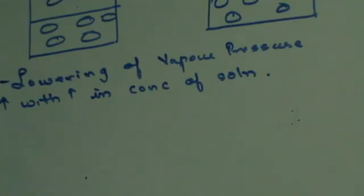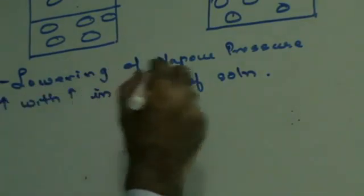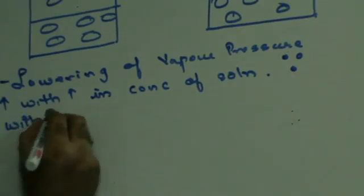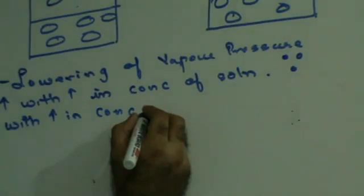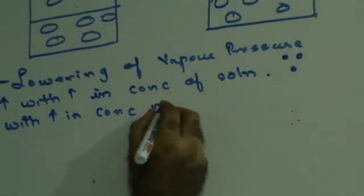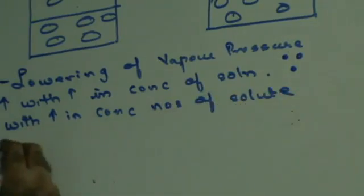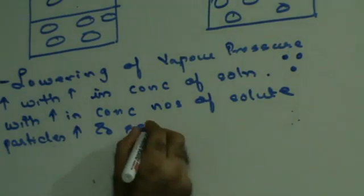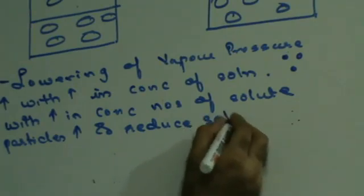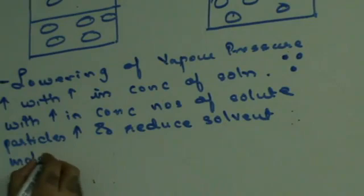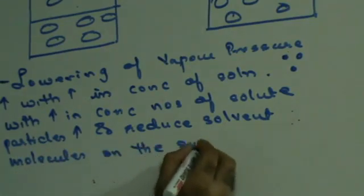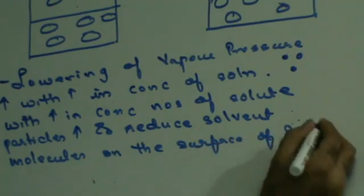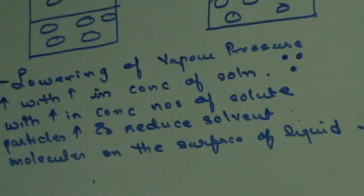Because with increase in concentration, the number of solute particles increases and thereby reduces the number of solvent molecules on the surface of the liquid. It is primarily because of the blockage of the solvent molecules from the surface of the solution that the vapor pressure changes. Once we understand this, we can understand all the subsequent laws.